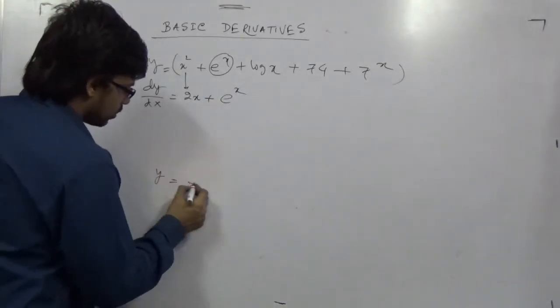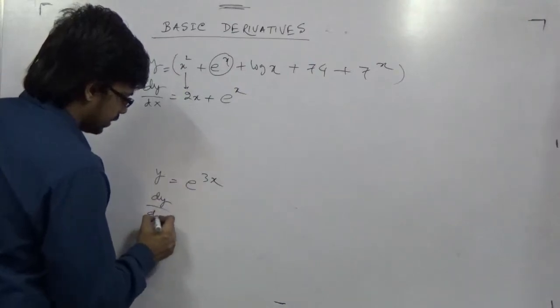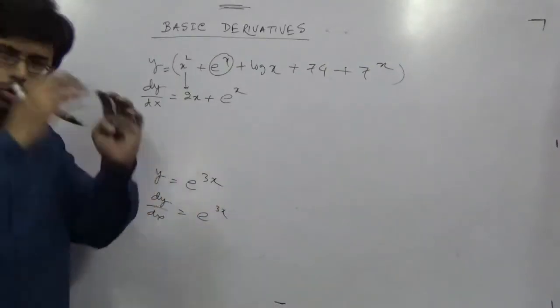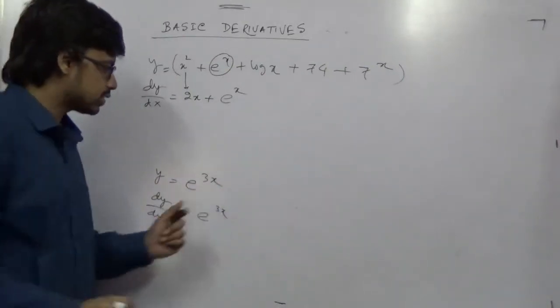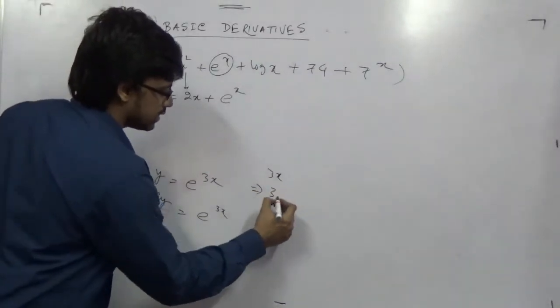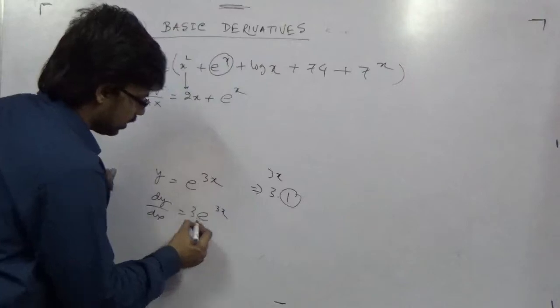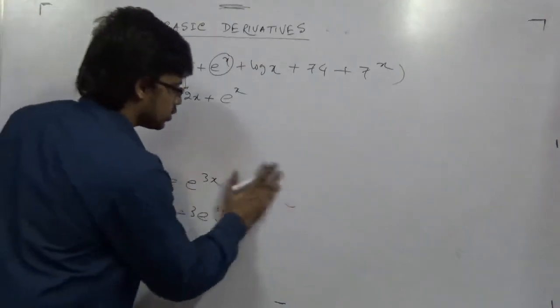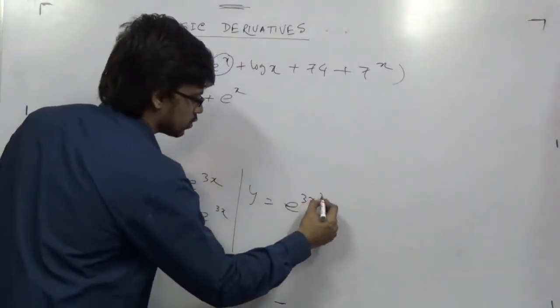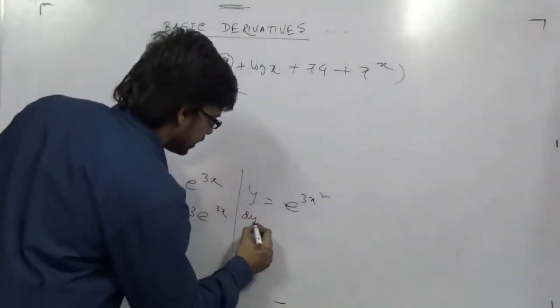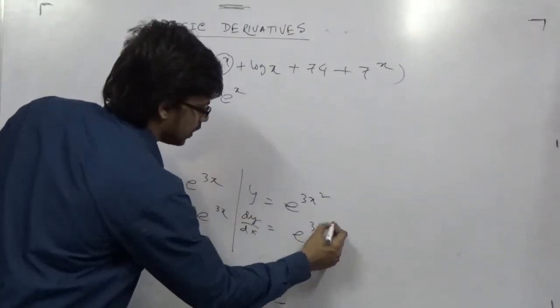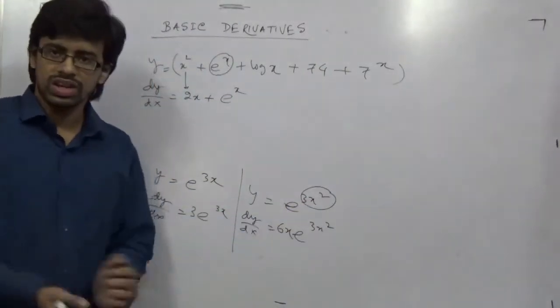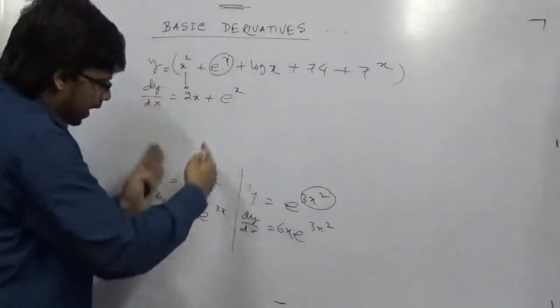But if y equal to e to the power 3x is given, then derivative will be e to the power 3x. But this 3x will be again differentiated separately. Do it in your brain. You don't have to show that. So 3x, what is 3x derivative? 3 gives you 3, and this x becomes 1. So this 3 will come down. It's not this 3. This entire 3x is differentiated. So you can ask me, what happens y equal to e to the power 3x square. This is also simple. dy/dx is just this thing: e to the power 3x square, and then the derivative of this, which is nothing but 6x. Because 3, this 2x is coming down. Same process.